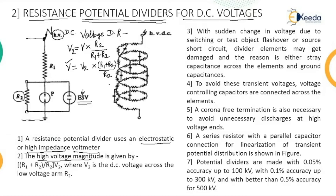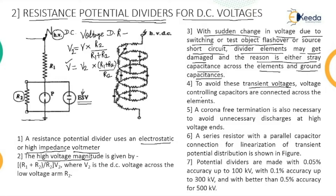With a sudden change in voltage due to switching, whenever switching takes place, or if the test object flashes over or the source is short-circuited, the divider elements may get damaged. The reason is either stray capacitance across the elements or ground capacitances. To avoid this flashover, transient voltage-controlling capacitors are connected across the elements. A corona-free termination is also necessary to avoid unnecessary discharge at high voltage range.